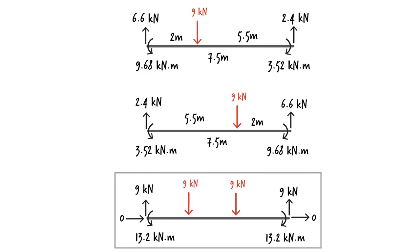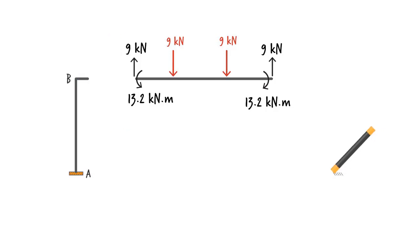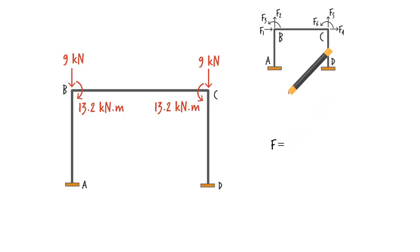Now we are in a position to determine the equivalent joint loads. Using static equilibrium, we transfer the member end forces to their adjacent joints, like this. These joint loads can be viewed as the effect of the member loads on the joints. So we can replace the member loads with the joint loads, like this.